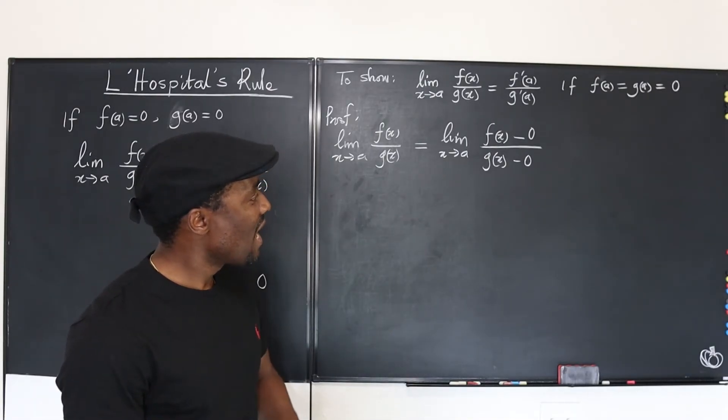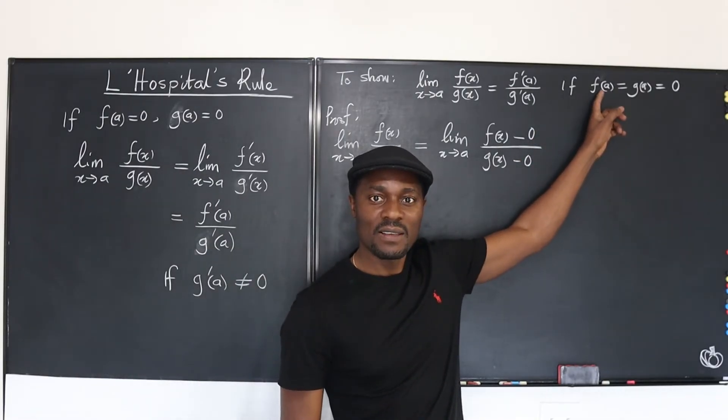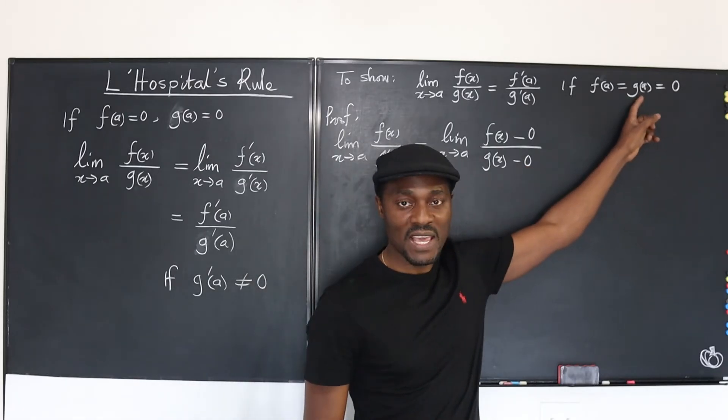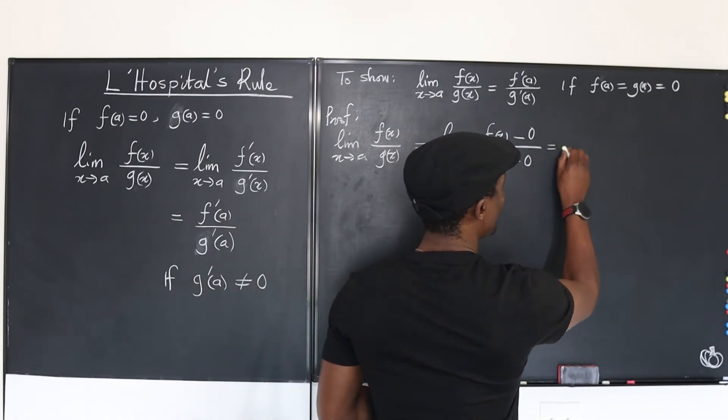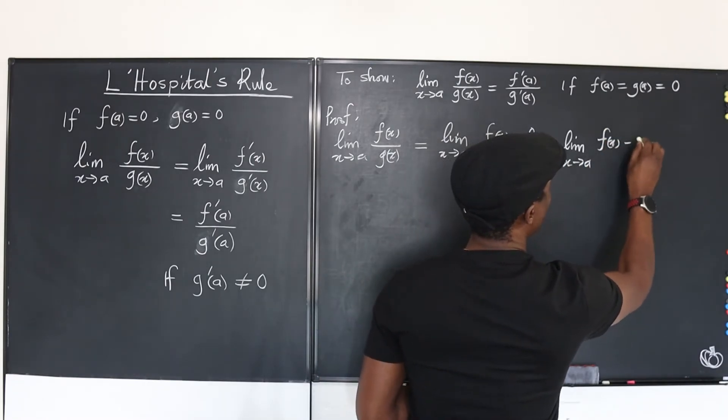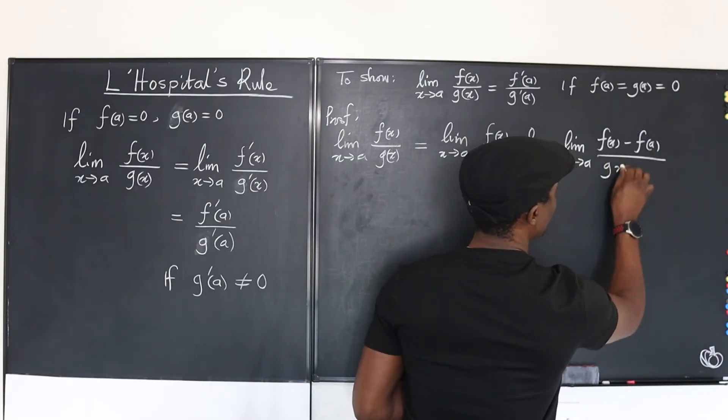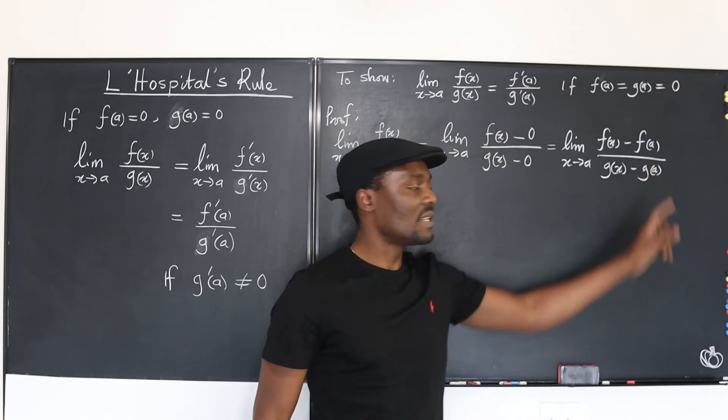What if, because I know what 0 is, 0 is f of a, and I know what this 0 could be. This 0 could be g of a, I might as well write this function as equal to the limit as x goes to a of f of x minus f of a divided by g of x minus g of a, because this is 0 and this is 0.